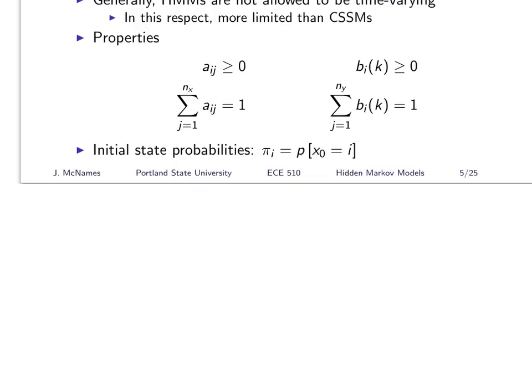There's also a set of initial state probabilities, just like with the continuous case, where before you've made any observation you've got to have some probabilities of where the system starts. So you also need these pi's. I misspoke earlier — all you need isn't just the A's and B's, you also need pi's. Pi is common notation in this literature for those initial state probabilities.